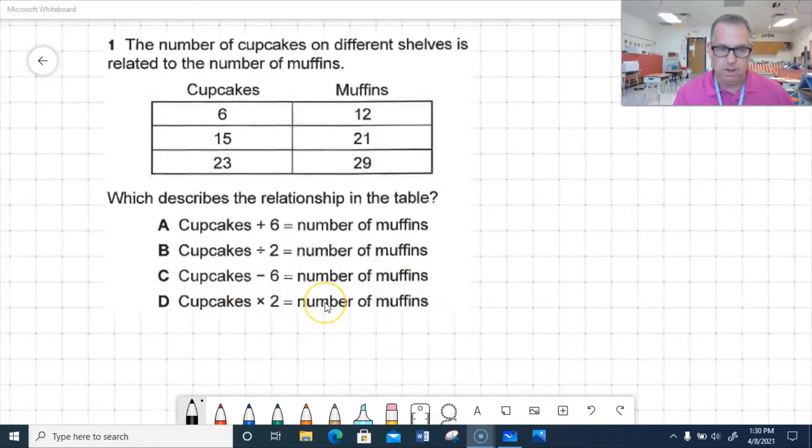We're going to look at D first. And the reason I'm going to look at D first is a lot of times that's going to be one we're going to try to go to. A lot of times, third grade we do a lot of multiplication. So we automatically want to multiply. So I'm going to look at the first row right here. So cupcakes times 2. And that is true. It does 6 times 2 does equal 12. Okay, but it's got to be true on all the data. So I'll check it in the next one. 15 times 2. Well, 15 times 2 is 30. So it doesn't equal 21. And 23 times 2 would be 46, not 29. So it cannot be D.